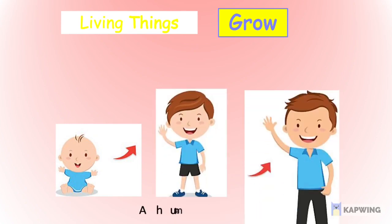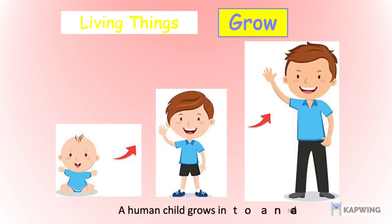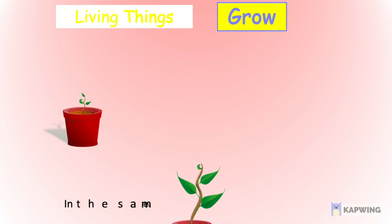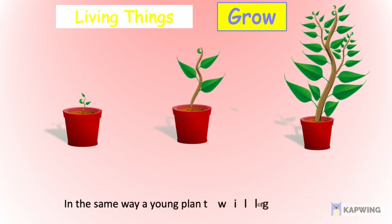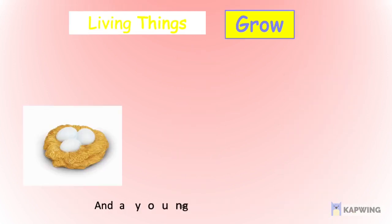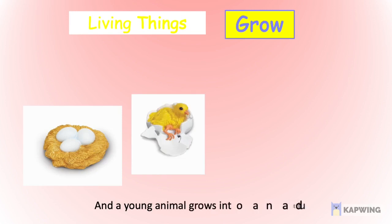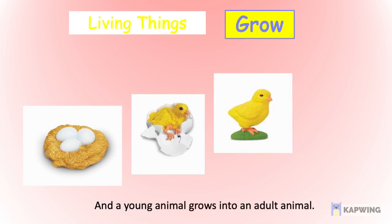Living things grow. For example, a human child grows into an adult. In the same way, a young plant will grow into an adult plant, and a young animal grows into an adult animal.